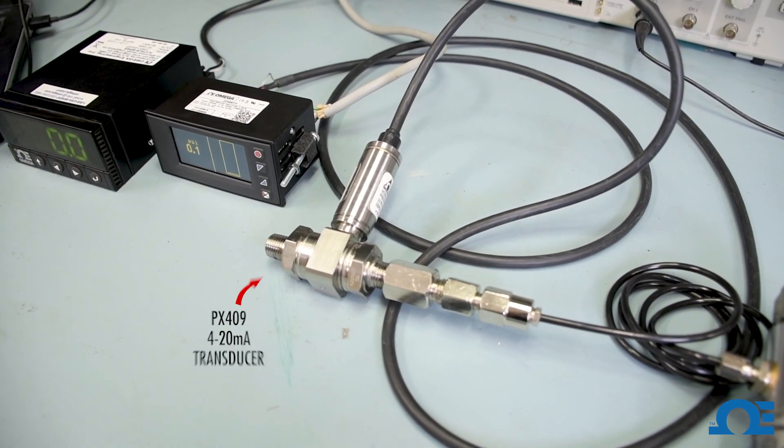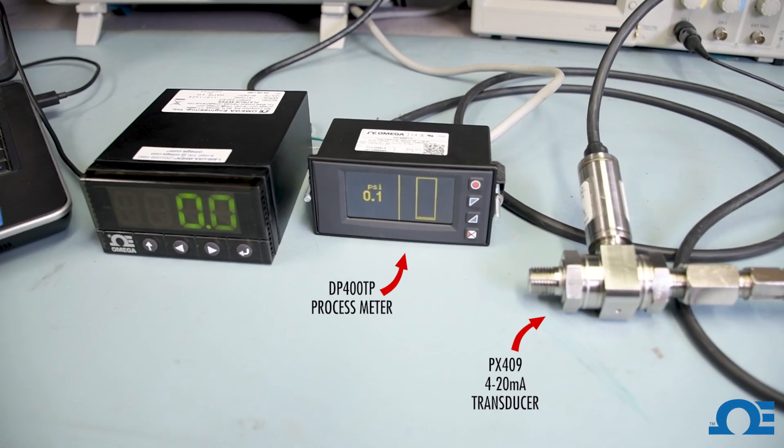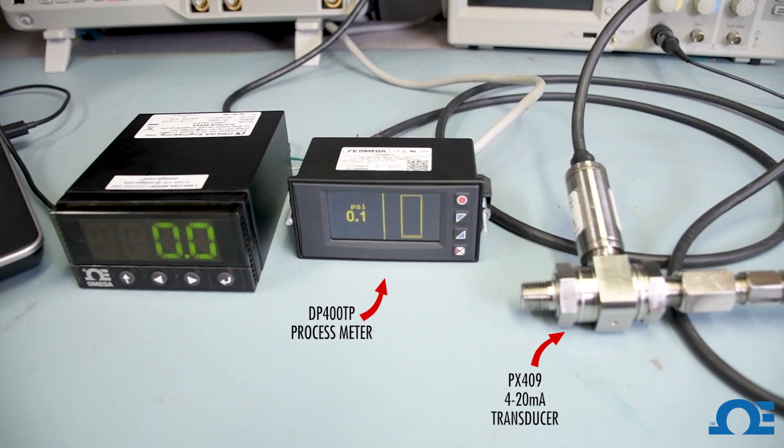We're going to be using a PX409 milliamp output pressure transducer, connecting it to a DP400TP, which is a fast response process meter.